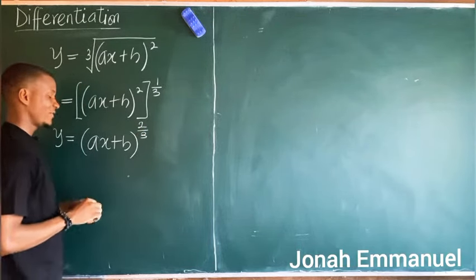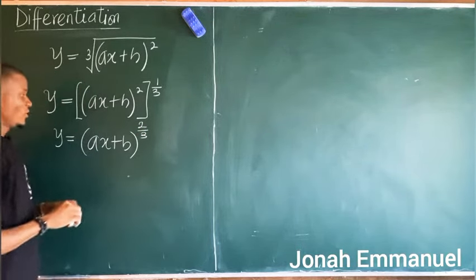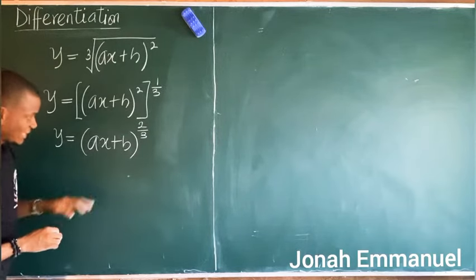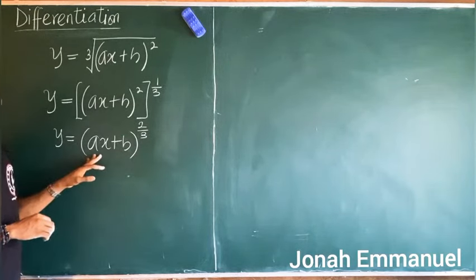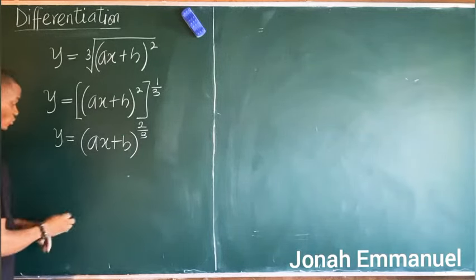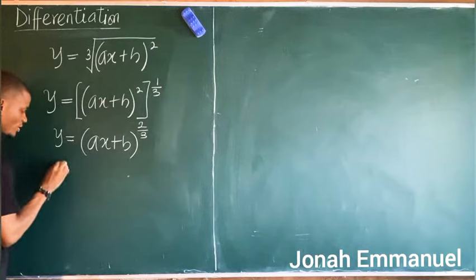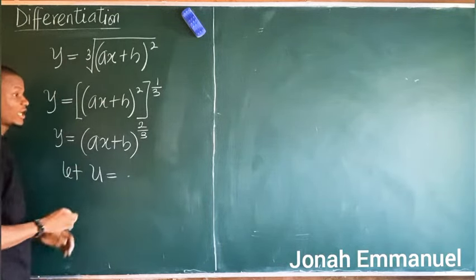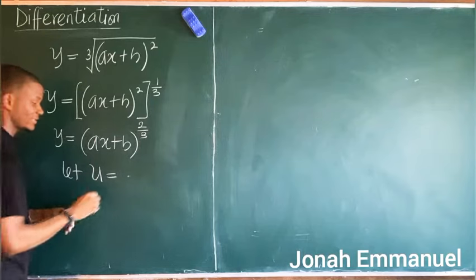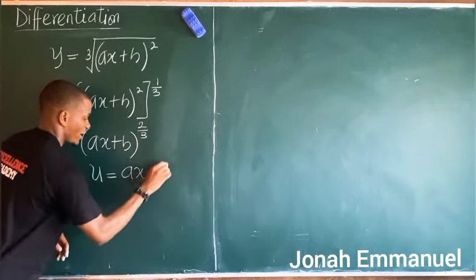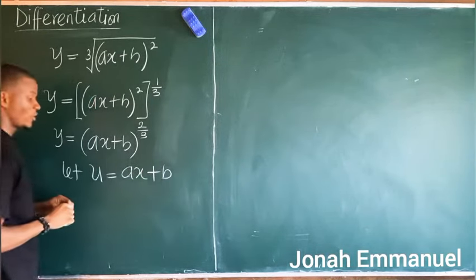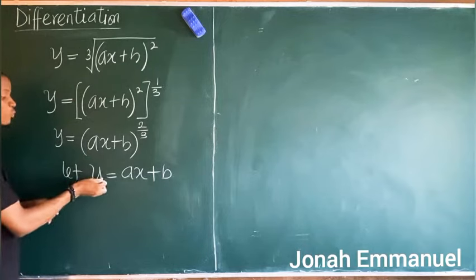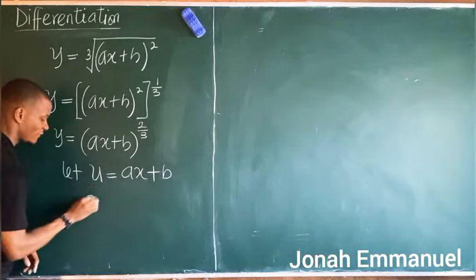This now looks a bit easier to solve. Using chain rule, I'll let u equal all the terms inside the brackets, so u equals ax + b.